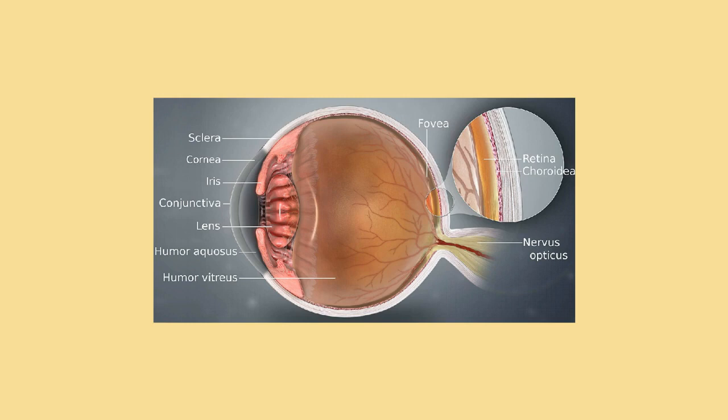For both eyes combined, binocular vision visual field is approximately 100 degrees vertical and a maximum 190 degrees horizontal, approximately 120 degrees of which makes up the binocular field of view (seen by both eyes), flanked by two uniocular fields (seen by only one eye) of approximately 40 degrees each. It is an area of 4.17 steradians, or 13,700 square degrees for binocular vision.